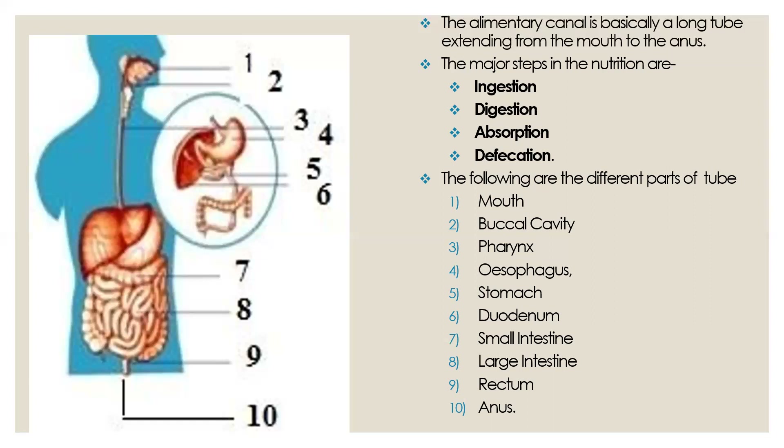The undigested food particles are temporarily stored in a tube-like structure called the rectum. Finally, the rectum opens outside the organism through the anus. These are the different parts of the alimentary canal, which starts from the mouth and ends with the anus.